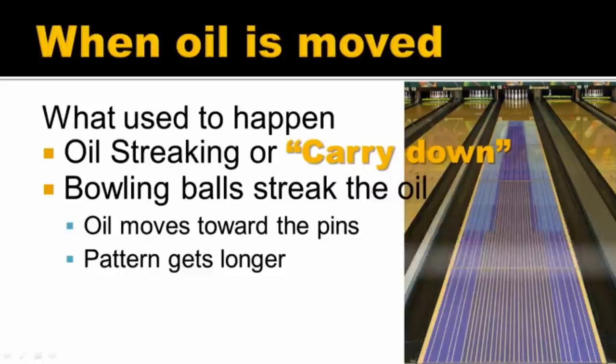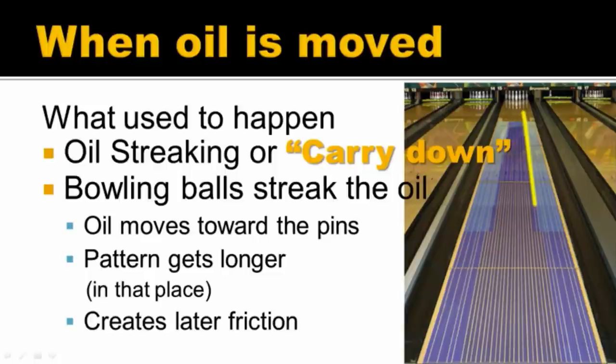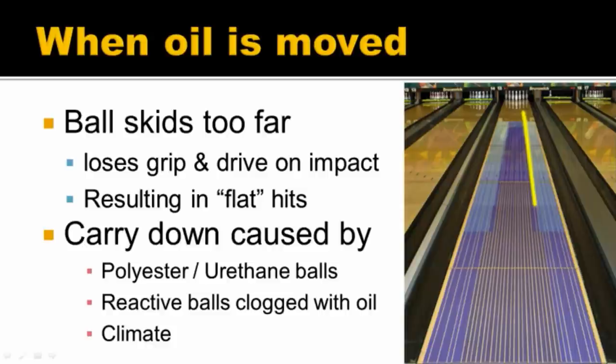That little spot drawn in yellow is where the oil gets moved from people bowling before, and you can see it goes a little bit past the end of the pattern. In that part of the lane, the pattern actually gets a little bit longer — meaning we've got a little bit less friction, because we've got less back end for the ball to hook in. The symptoms are that the ball simply skids too far, loses grip, and doesn't drive on impact — it bounces off the pins, resulting in flat hits. Carry down is generally caused by people throwing polyester balls, urethane balls, or old reactive balls that are clogged with oil.